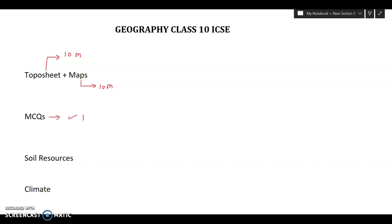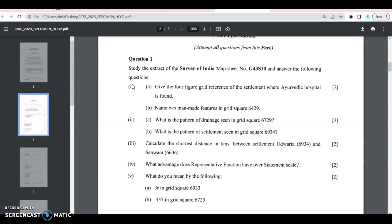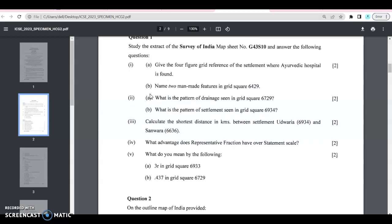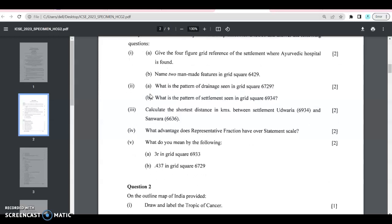Then we have MCQs, again 10 marks. For topo sheets, you will get basic questions based on drainage pattern and settlements. You have to measure the distance. As you can see, questions on four figure grid reference are asked, and you have to give the four figure grid of a settlement, drainage pattern, or a place.